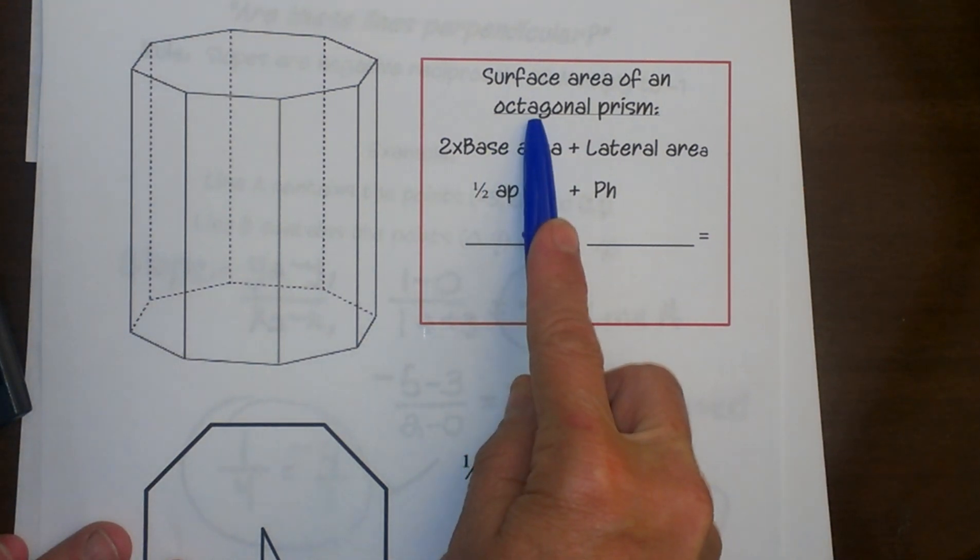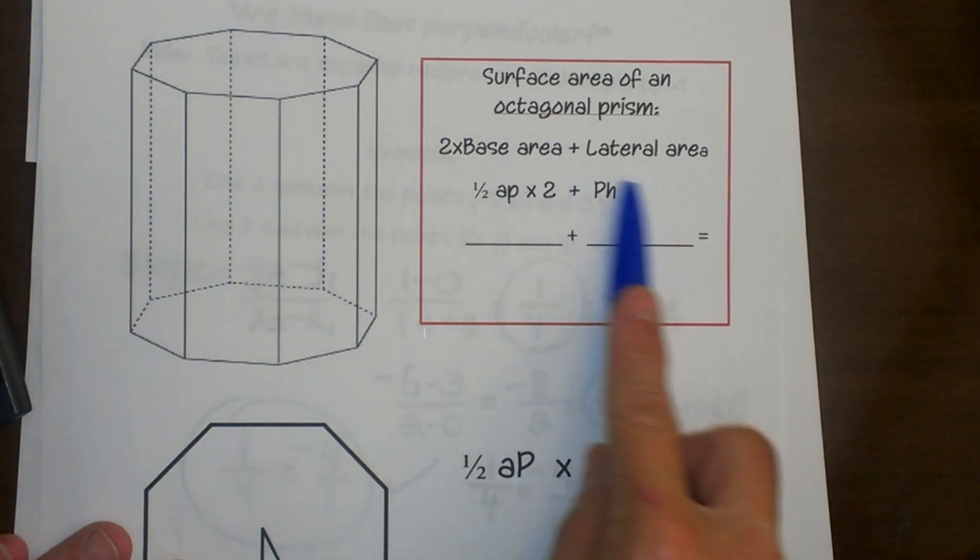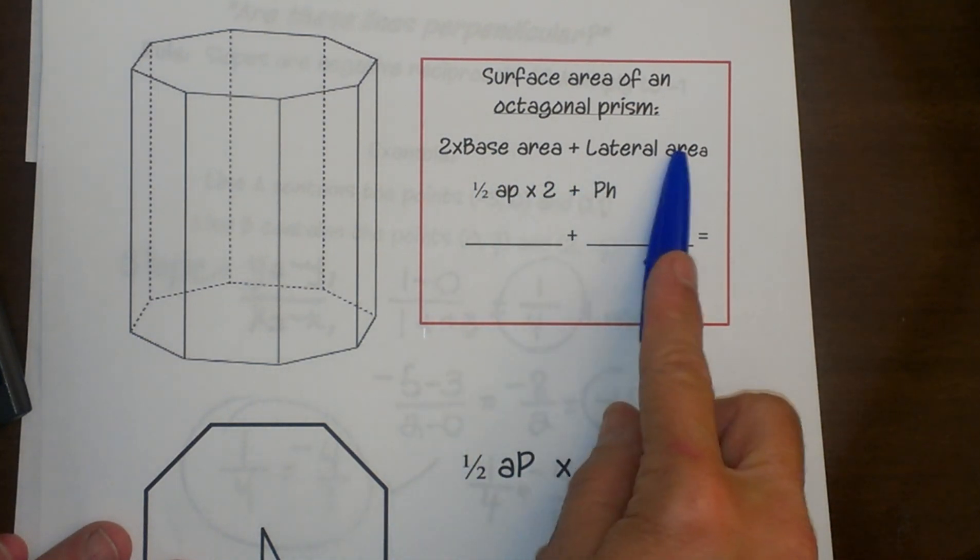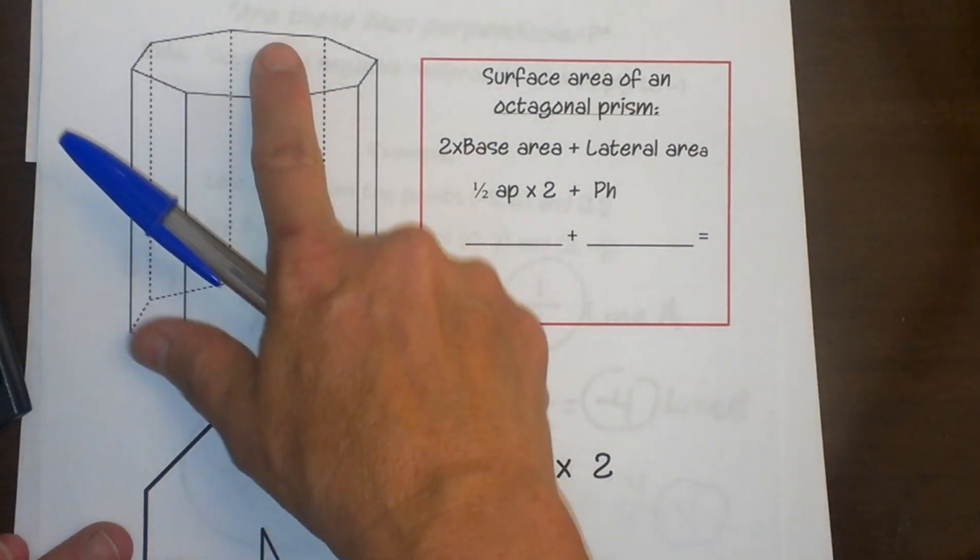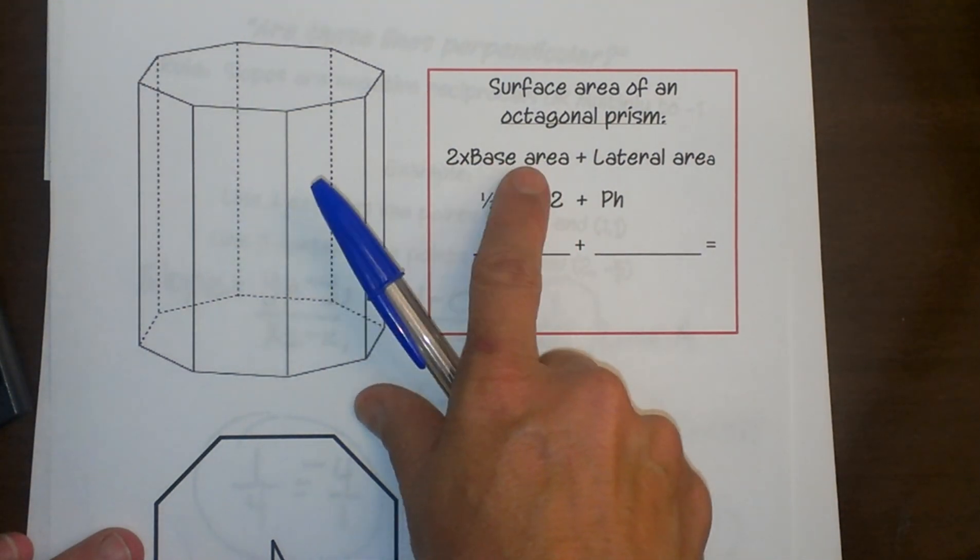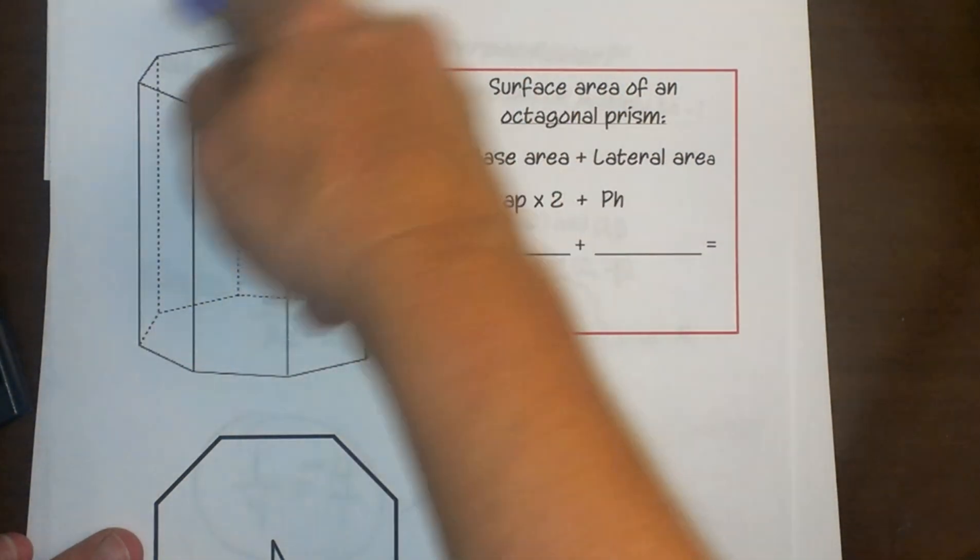To find an octagonal prism, you're going to use the same basic formula as a hexagonal prism: two times the base area plus a lateral area. Because you have to account for the top base and the bottom base, that's why you're doubling your base area, and then your lateral area is of course the sides.